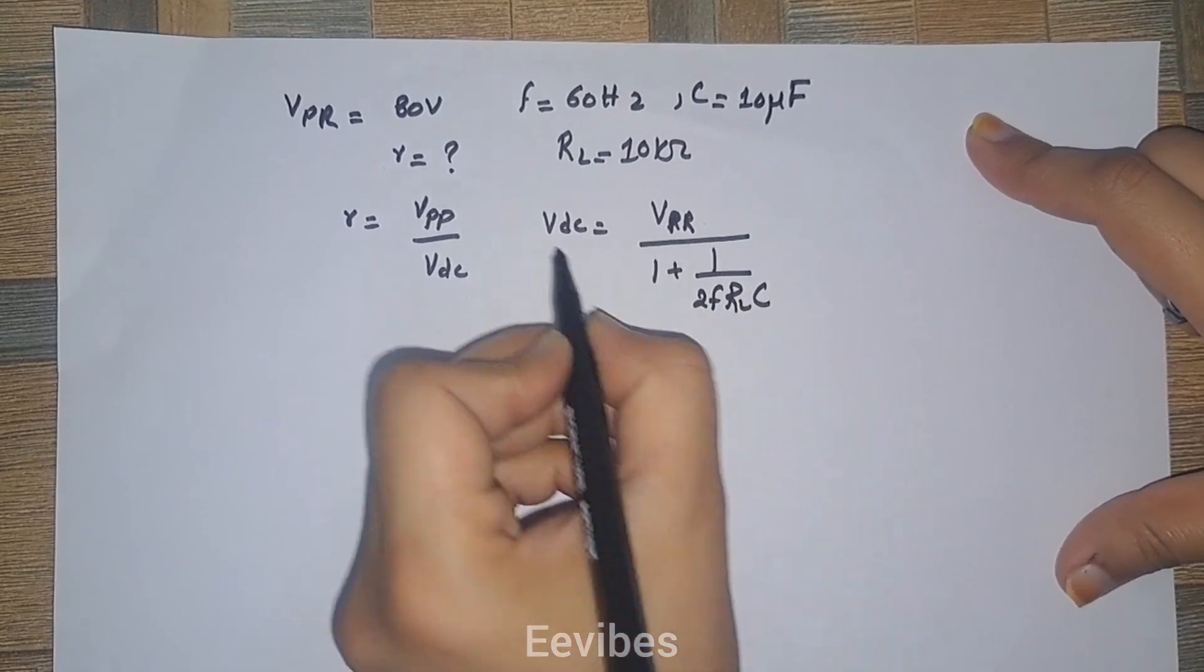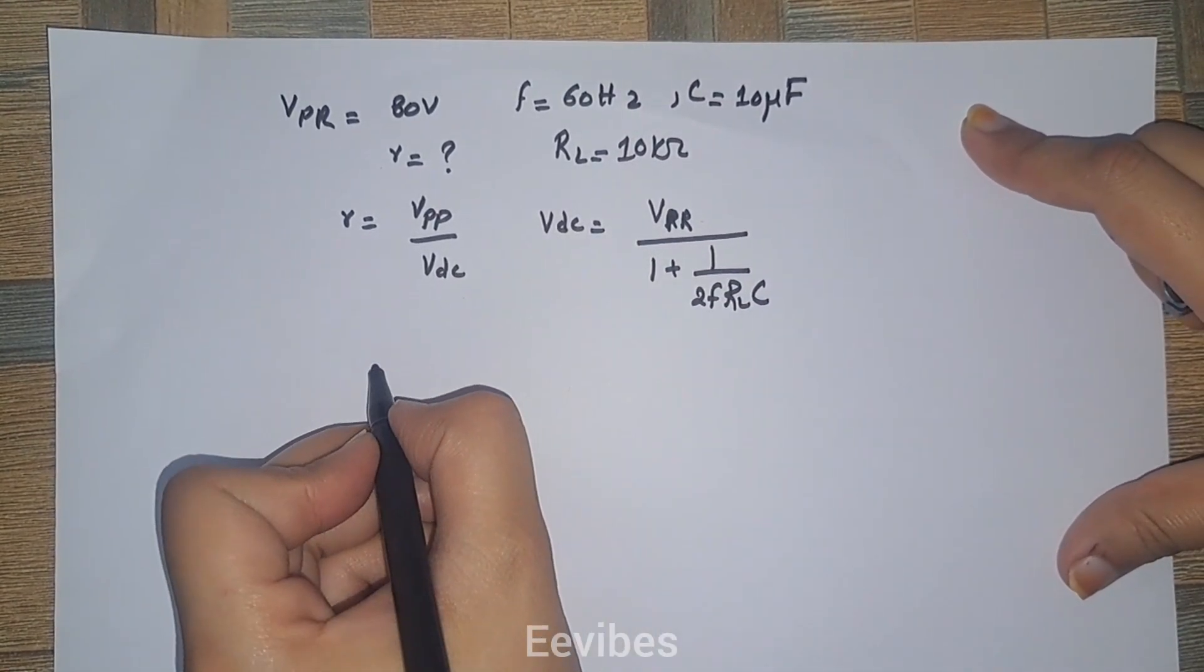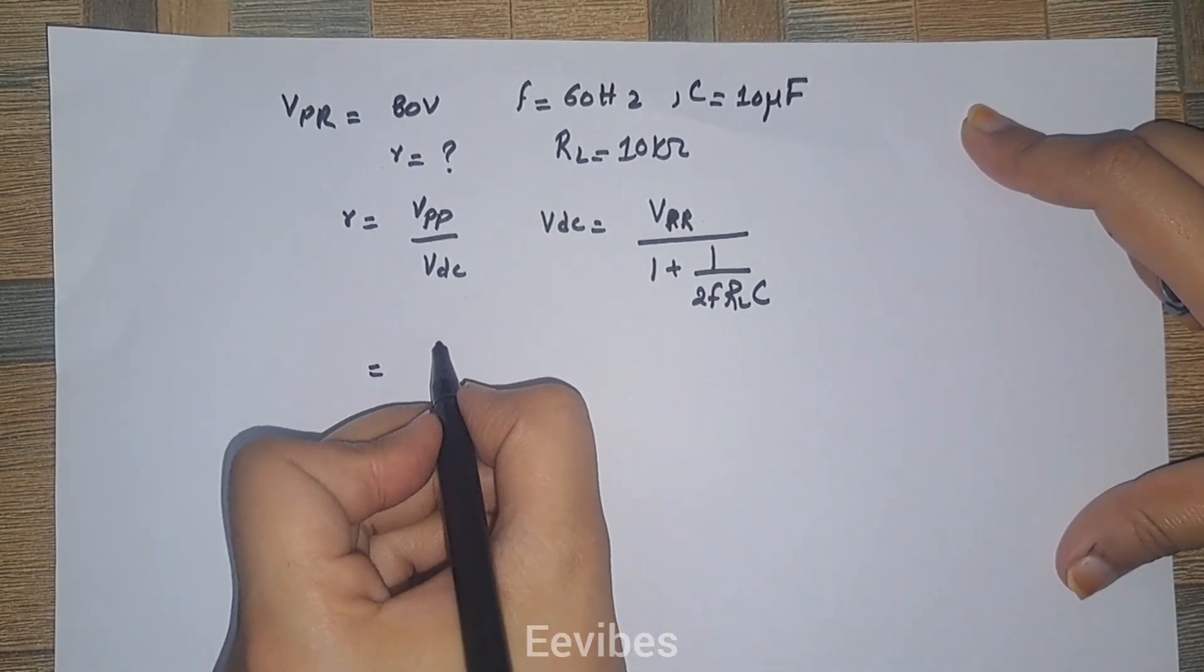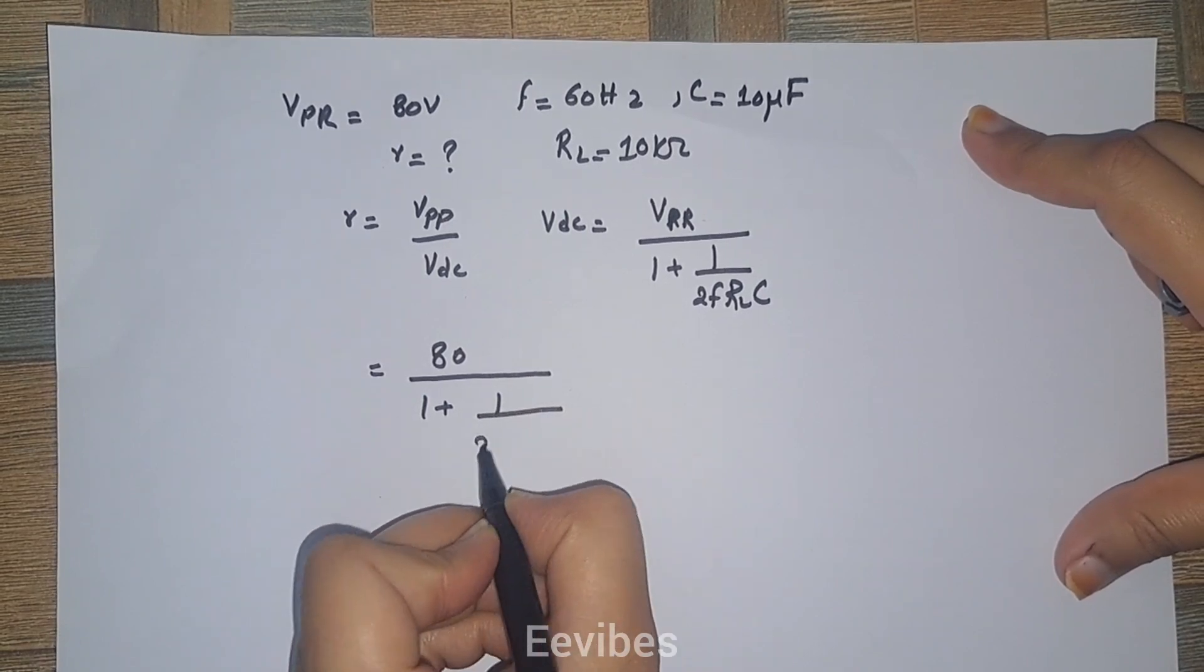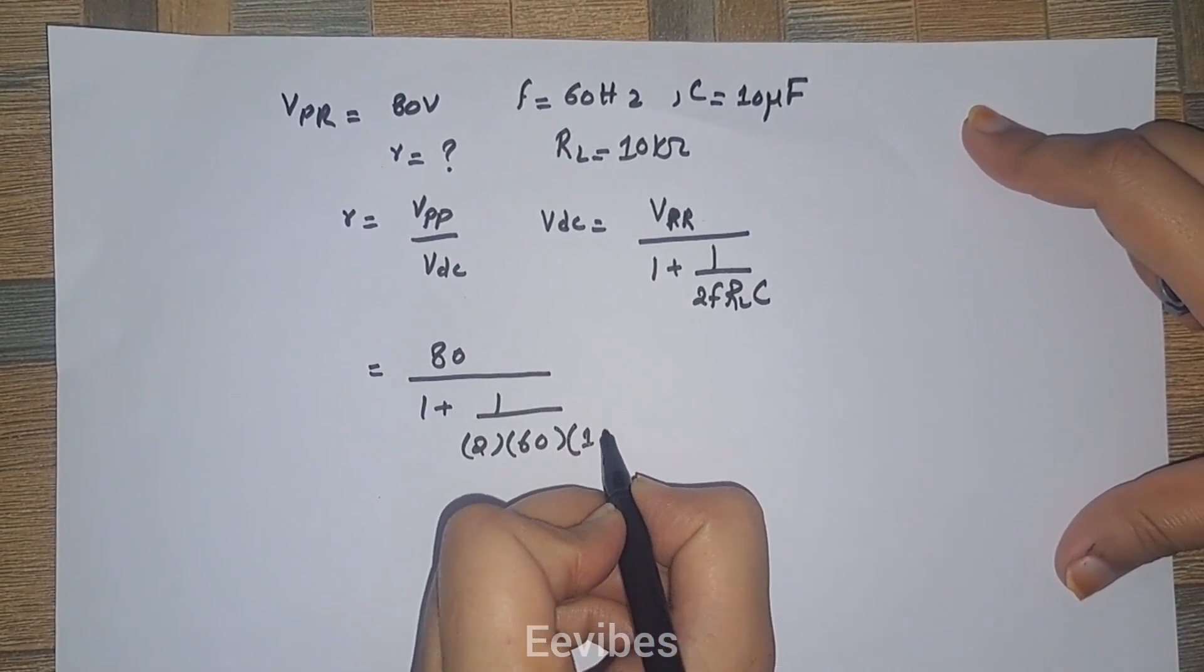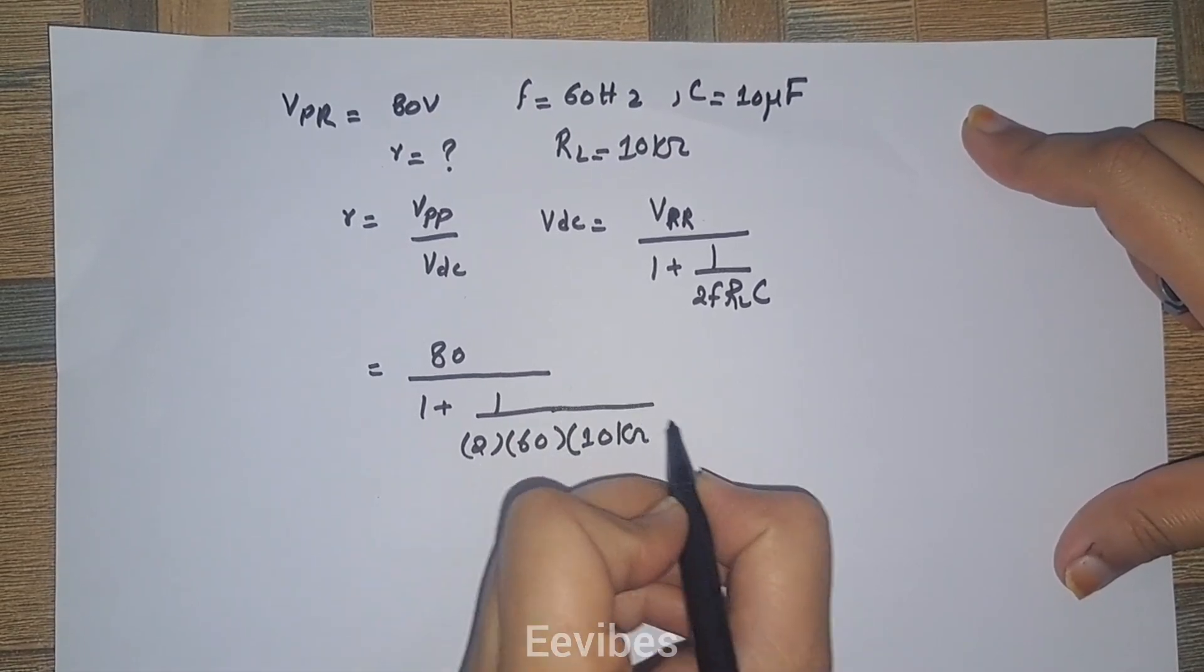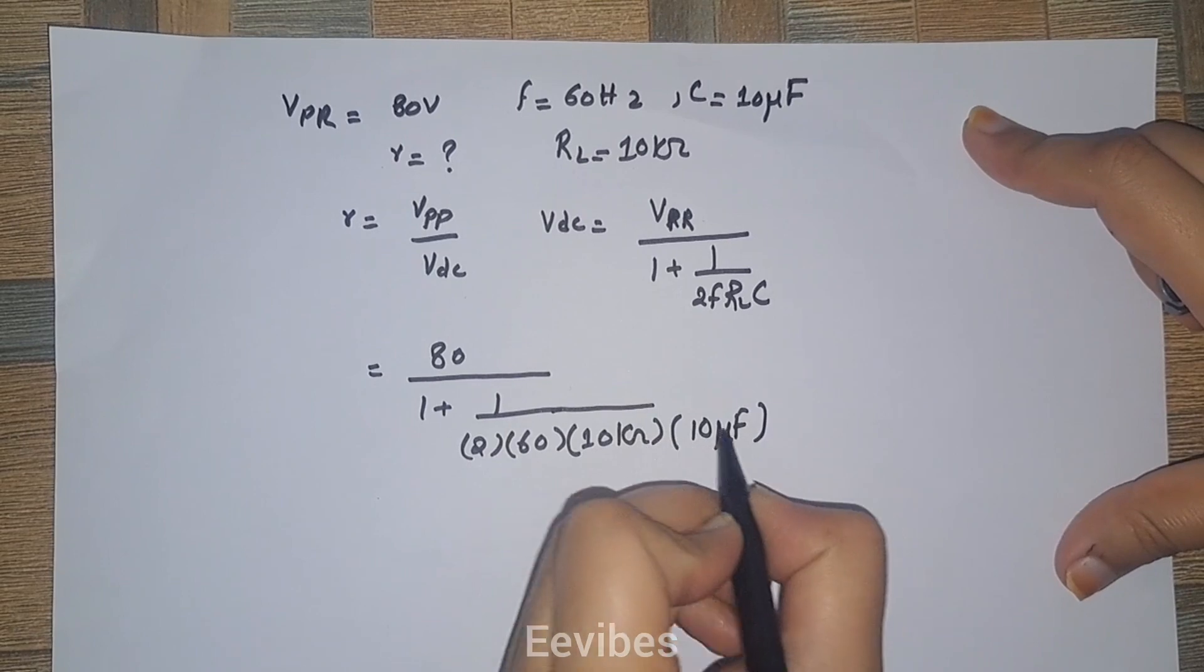This derivation is given in my video lectures, you can watch it from the playlist. Let's just substitute the values. You will get 80 volts divided by 1 plus 1 over 2 into 60 into 10 kilo ohms and into capacitor which is 10 microfarad.